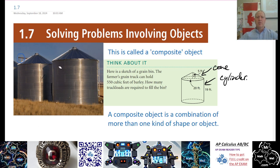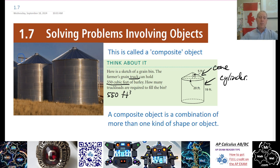So we're going to solve this problem. Here's a sketch of a grain bin. The farmer's grain truck can hold 550 cubic feet of barley — that's 550 feet cubed per truckload. How many truckloads will fill this bin? We need to find out how many cubic feet of material can fit inside.